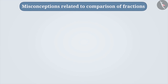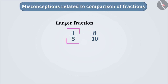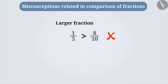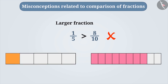Now let's see some common mistakes that occur during the comparison of fractions. Often it is remembered that the fraction with the smaller denominator is the larger fraction. With this understanding, the numerators of 1/5 and 8/10 are ignored and by comparing only the denominators, it is understood that 1/5 is a bigger fraction than 8/10. This is incorrect. By looking at the strips representing 1/5 and 8/10, you can clearly see that 1/5 is actually smaller than 8/10.